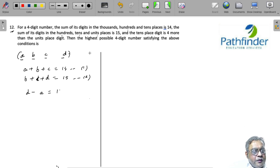Then you are also given that the digit in the tens place is 4 more than the digit in the units place, so c minus d is equal to 4. This equation will govern the maximum possible value of d.